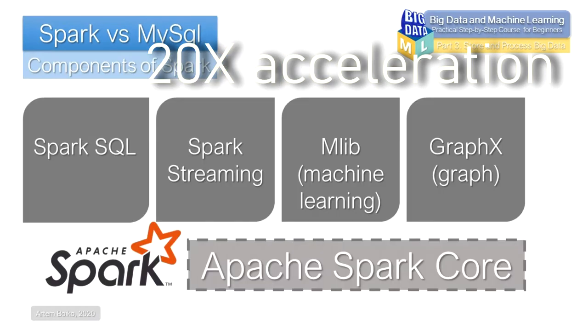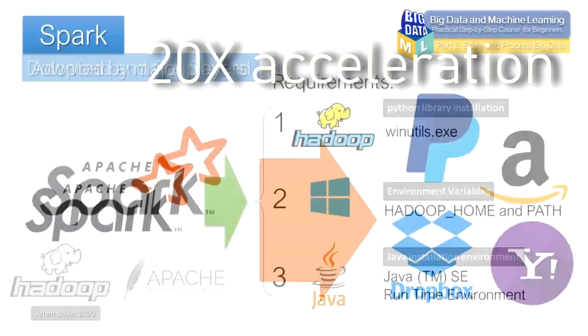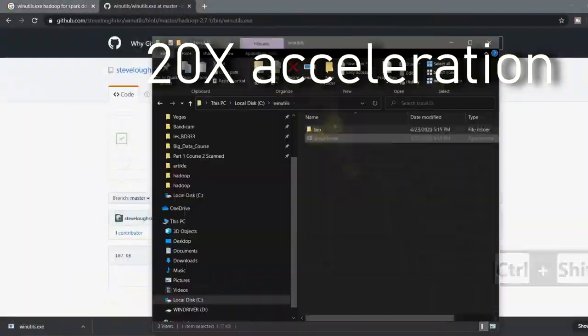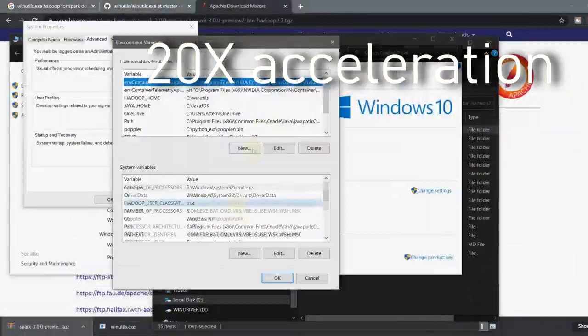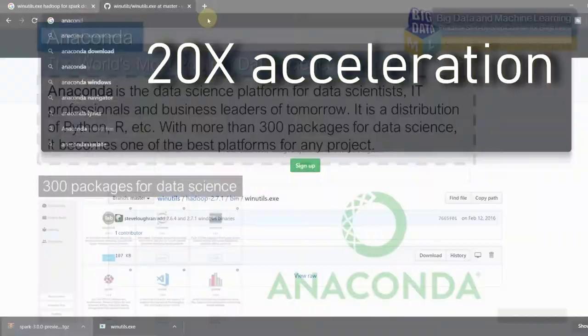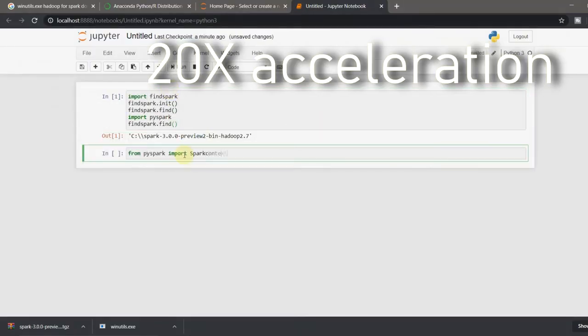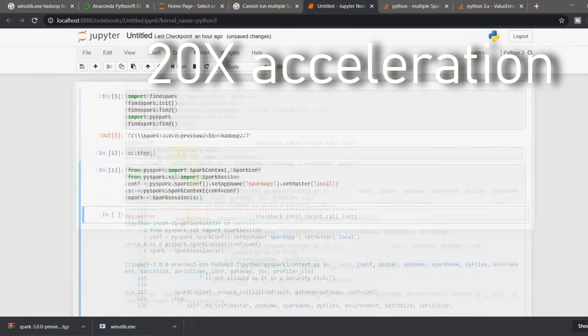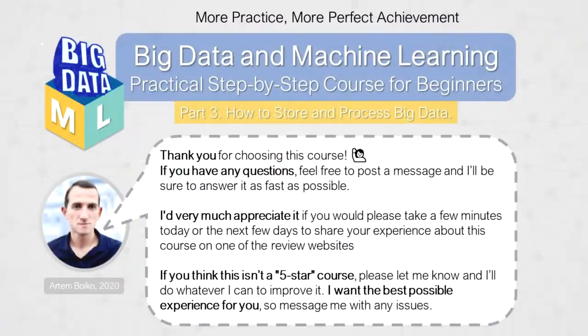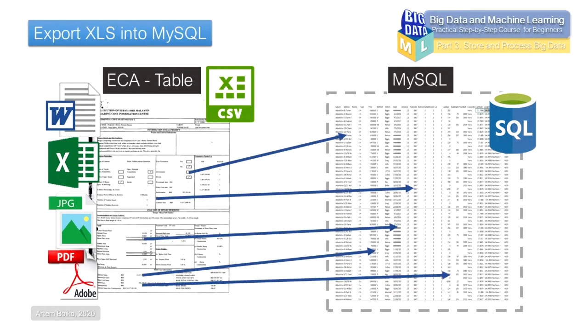In the fifth lesson, we will take one regular Excel table and transfer the information from this table to the MySQL server. Then we will install Apache Spark in order to work with datasets in a distributed manner.